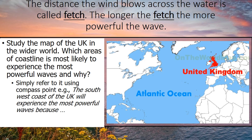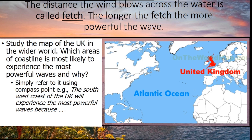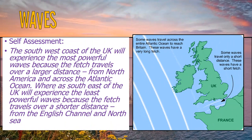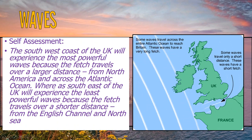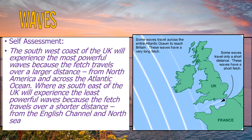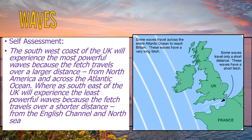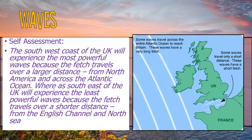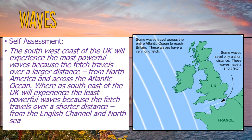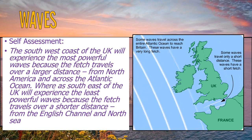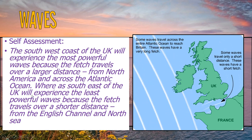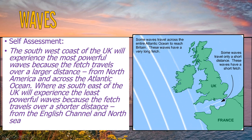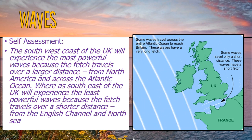Two or three minutes — just have a little think and answer that question. A good answer would be: the southwest coast of the UK will experience the most powerful waves because the fetch travels over a large distance from North America across the Atlantic Ocean, whereas the southeast of the UK will experience the least powerful waves because the fetch travels a shorter distance.